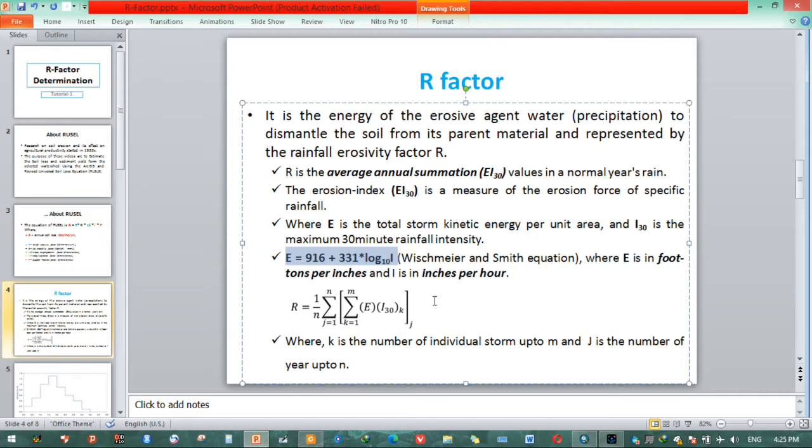R can be calculated with the average summation of this EI30, E times I30. R can be represented in such a way, generalized using this equation. According to this equation, K is the numbers of individual storms up to M. After sum up, we need to also sum on a yearly basis. Finally, we need to divide by the numbers of years.